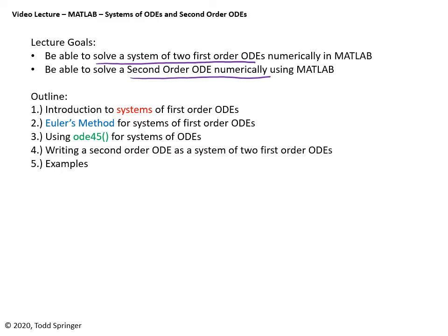That might seem a little strange, but that's the idea. I need to explain what I mean by a system of first-order differential equations, then remind you of two ways to solve differential equations numerically: Euler's method and the built-in MATLAB function ODE45. This seems a bit outside the mainstream topic of second-order ODEs, but we'll get there — because a second-order equation can be written as a system of two first-order ODEs. Then I'll do a few examples in MATLAB. That's the plan.